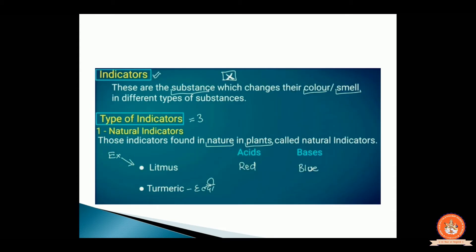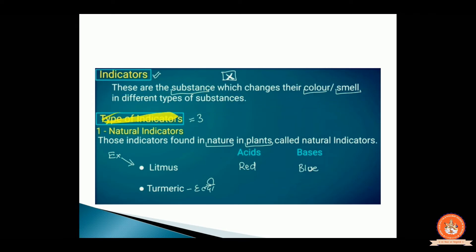Now moving on to the next point, that is indicators. These are substances which change the color or smell in the presence of different types of substances. Indicators play a very important role in chemistry. If you want to test a substance, indicators tell you what changes are occurring.